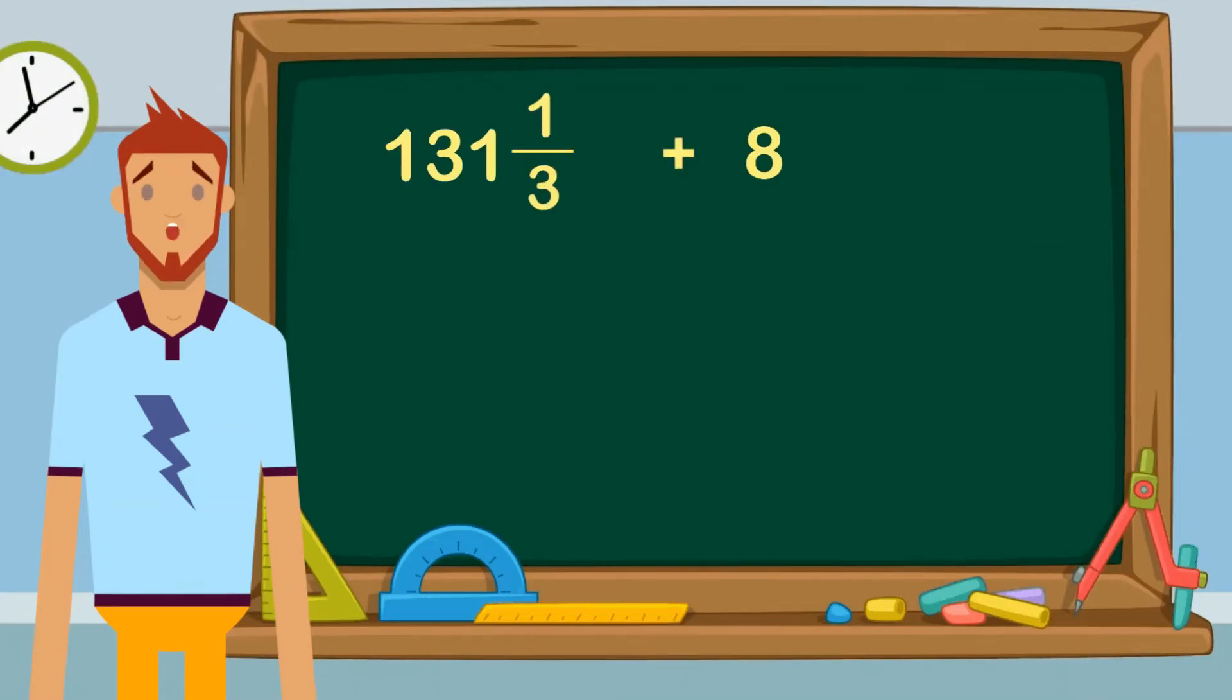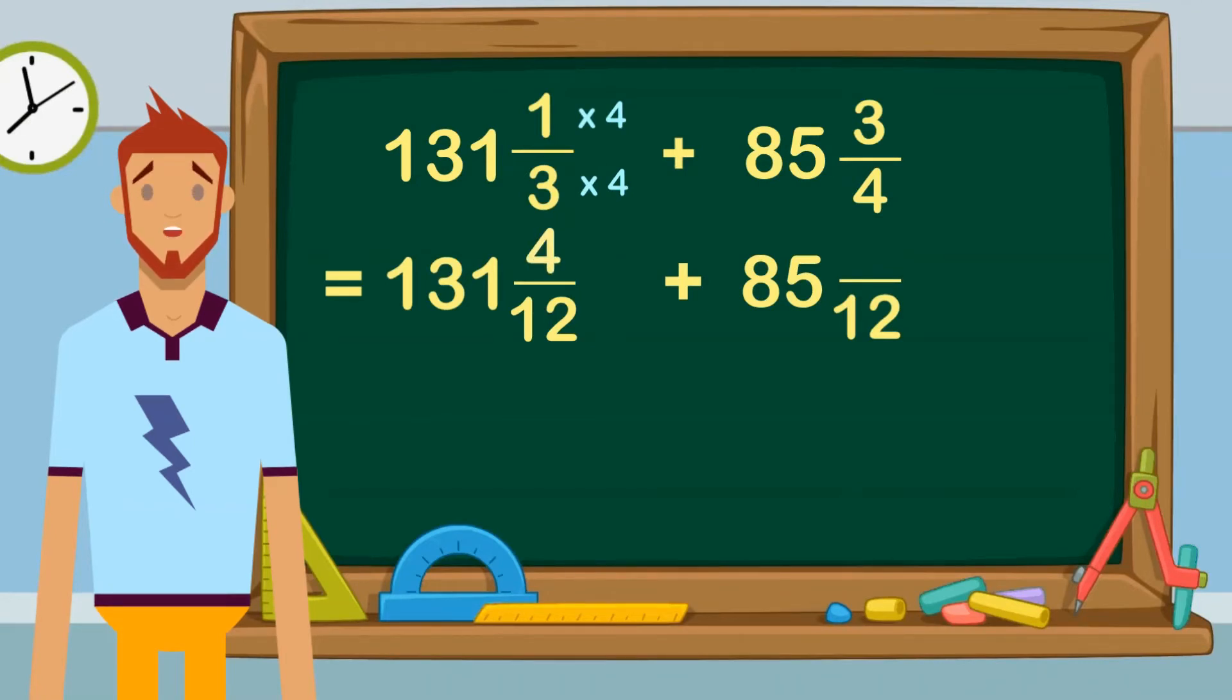Now that we have an LCD of 12, let's continue to add up our fractions. To get 12, we need to multiply 3 by 4. This means we also have to multiply the numerator by 4. Now we have 131 and 4/12.